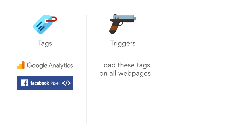Triggers then tell the website where to load the tags. For example, you want to have Google Analytics loaded on all of your website's public-facing pages so the data can be recorded in Google Analytics. In that case you would set a trigger to tell the Google Analytics tag to fire on all pages.